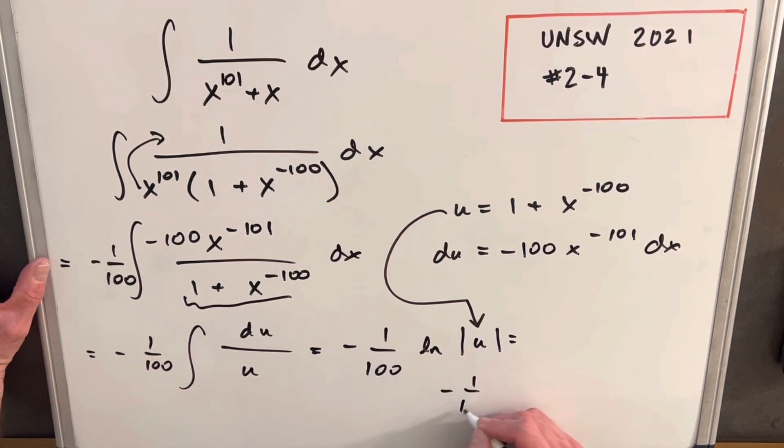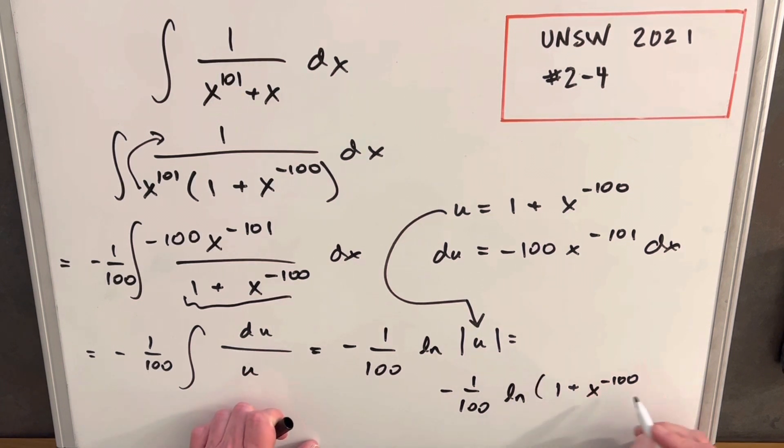It's going to be minus 1 over 100 natural log. And then here's our u. It's 1 plus x to the minus 100. But because this is an even power, we can drop our absolute value because this is always going to be positive. So I'll just write parentheses plus c and we're done.